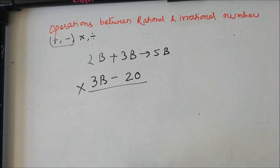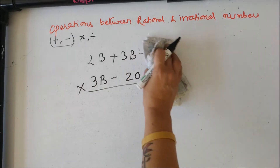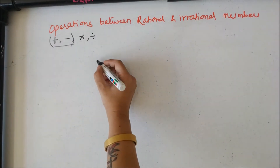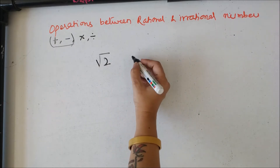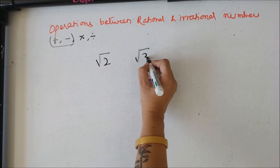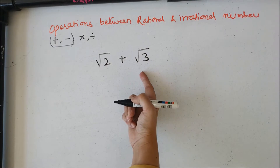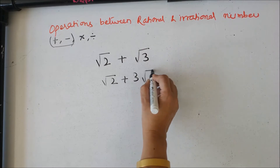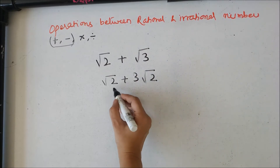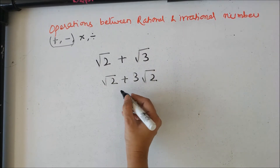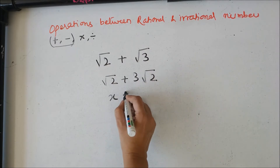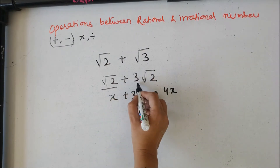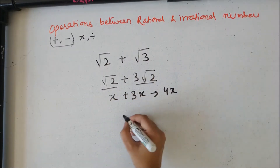Similarly, when we have to do addition and subtraction with irrational numbers, they have to be like terms. For example, root 2 is an irrational number and root 3 is an irrational number — we cannot add them; we have to leave it as it is. But root 2 plus 3 root 2 can be added, just like x plus 3x becomes 4x. So root 2 plus 3 root 2 becomes 4 root 2.